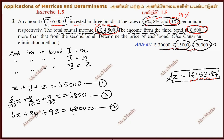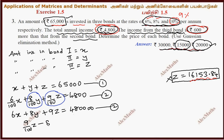The income from the third bond is 600 more than that from the second. That is, the third income minus the second income equals 600. So we have 9 by 100 of z minus 8 by 100 of y equals 600.